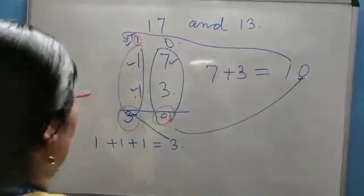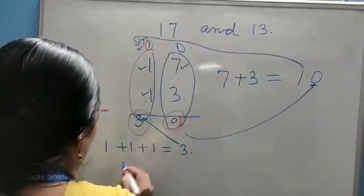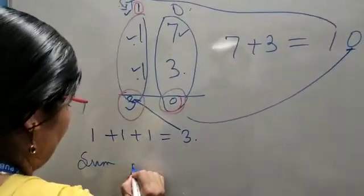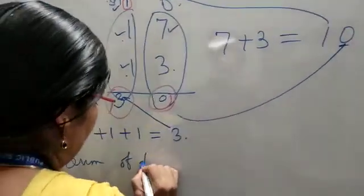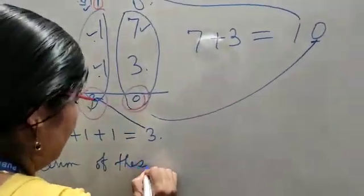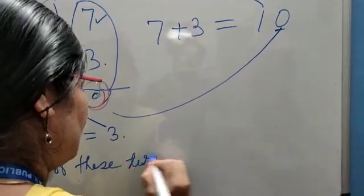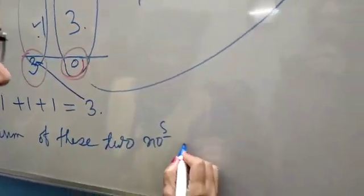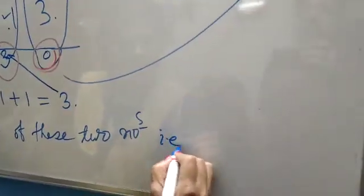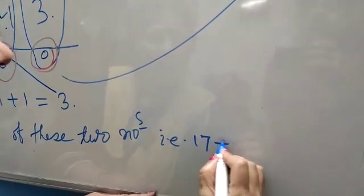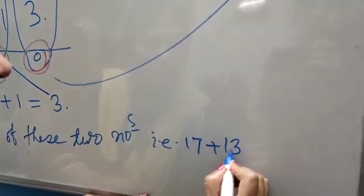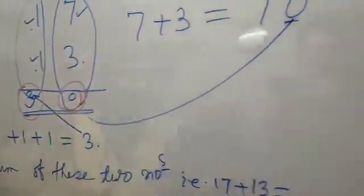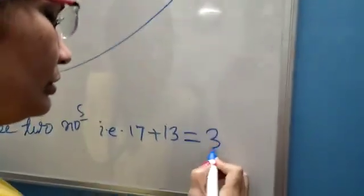Now the sum of these two numbers — that is 17 plus 13 — is equal to 30. Three, zero — thirty.